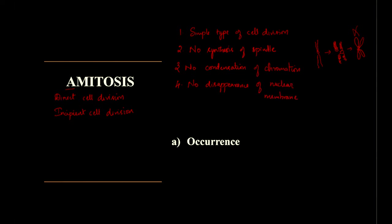In mitosis there are four phases: prophase, metaphase, anaphase, and telophase. In the prophase, the first thing is the disappearance of the nuclear membrane, but this is also not going to happen in amitosis.